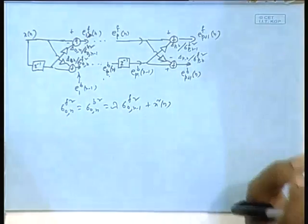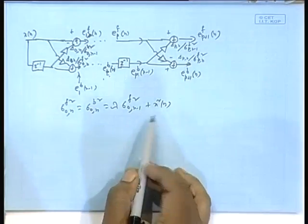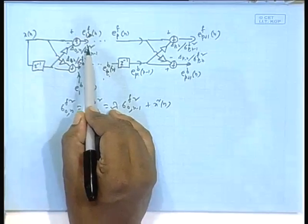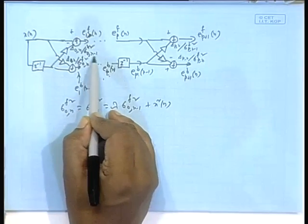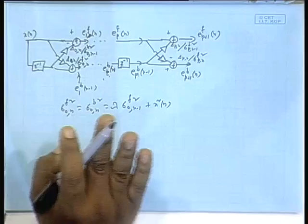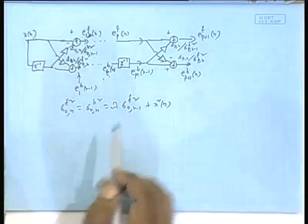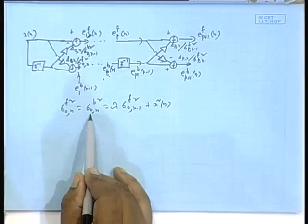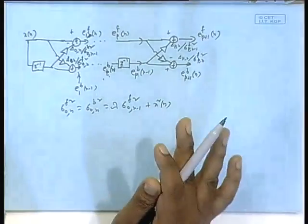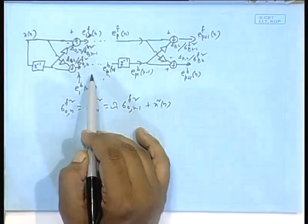Deltas are supposed to be known to us at each index. We only need to know sigma_0_n squared and sigma_0_b_(n-1) squared. The previous stage value is stored and the current one is stored for usage at index n+1. So, using that you find out these ones.